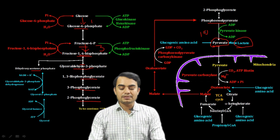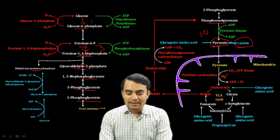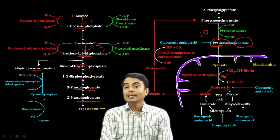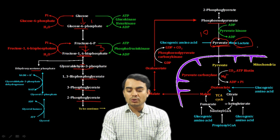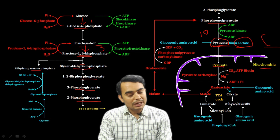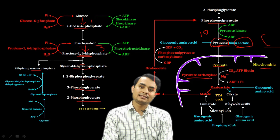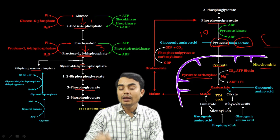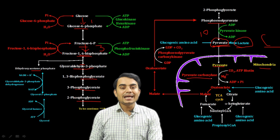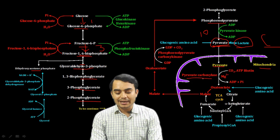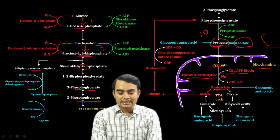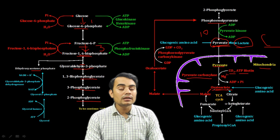Starting from pyruvate: to convert pyruvate to phosphoenolpyruvate, it cannot happen directly. First, pyruvate moves to the mitochondria. In the mitochondria, the enzyme pyruvate carboxylase is present. Pyruvate carboxylase, utilizing ATP and adding CO₂, converts pyruvate into oxaloacetate.